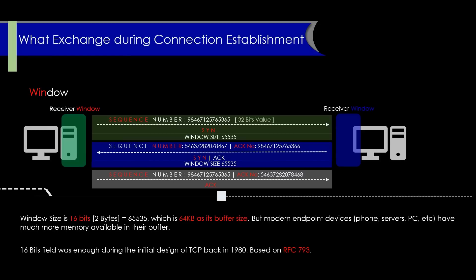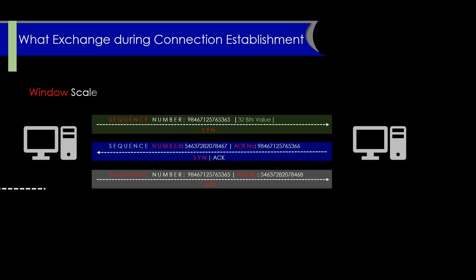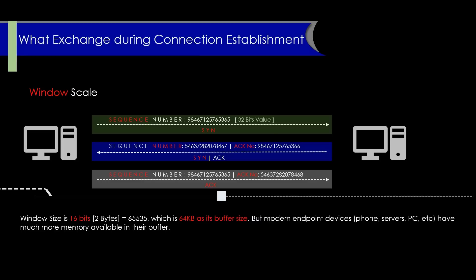As memory became cheaper and networks became much faster, the situation changed. If we need more than a 64 KB buffer, how could we allocate that using the 16-bit window field? To answer this, we look at the window scale option. Window scaling is a technique used in computer networking to allow efficient communication over high-speed networks. It enables large data transfers by adjusting the TCP window size from 65,535 bytes up to 1 GB.